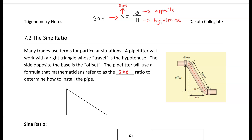Hey everyone, in today's video we're going to be looking at the sine ratio — this is your second lesson. Now if you remember SOH, this is going to be the SOH: S stands for sine, O stands for opposite, and H stands for hypotenuse. So it's sine equals opposite over hypotenuse. If that helps you to have that reference at the top of your page, go ahead and write that down right now.